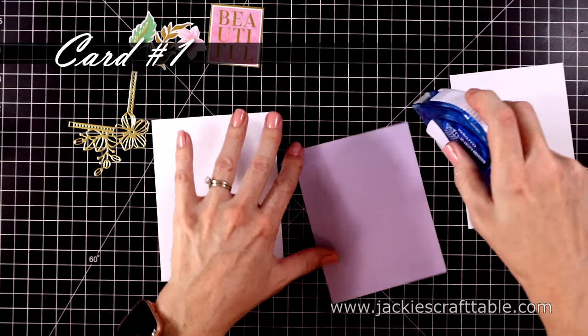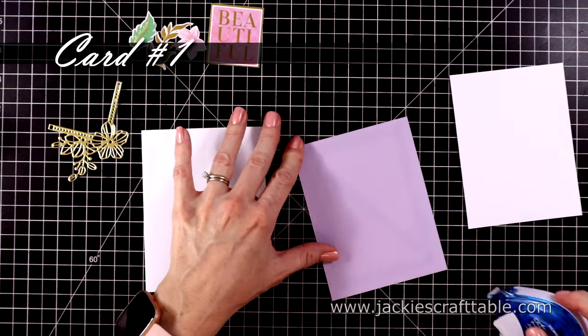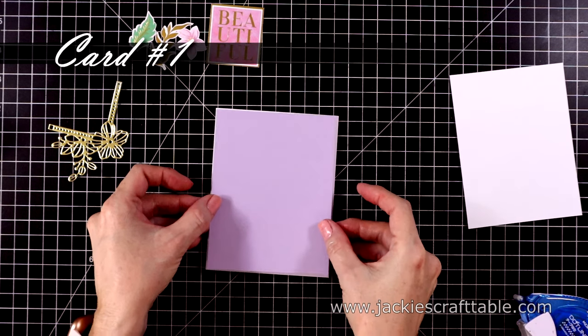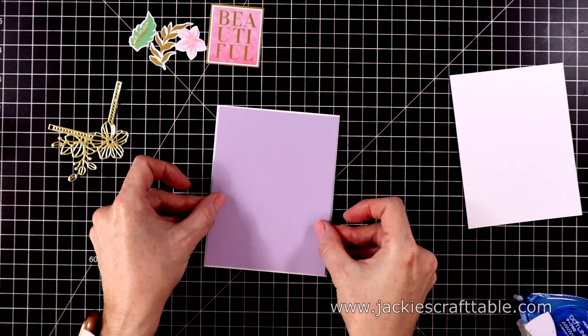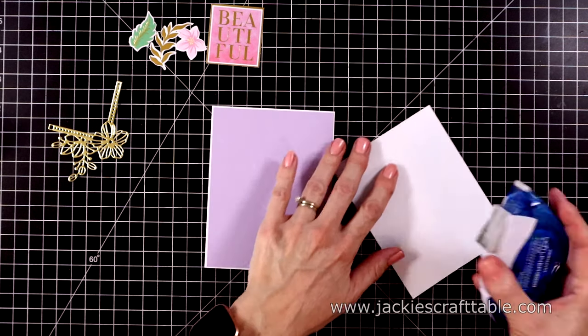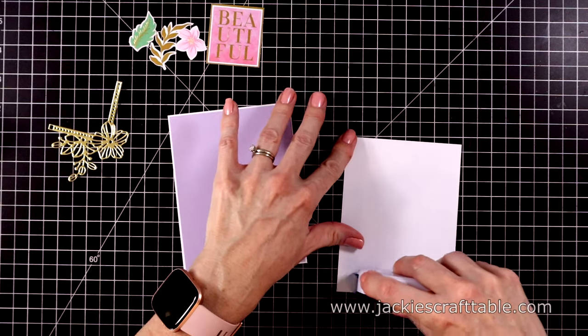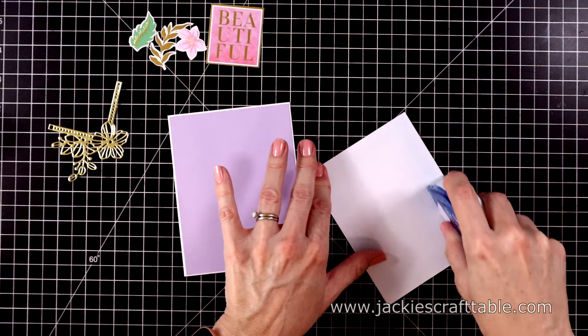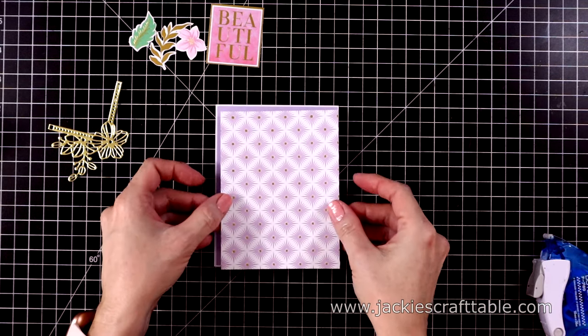For card number one, I'm going to use the die-cut shape sentiment that says beautiful. So I cut out a piece of purple cardstock. It's going to be just an eighth of an inch smaller than the white card base. I'm using a piece of patterned paper that have purple diamonds on it, as well as some gold foiling.